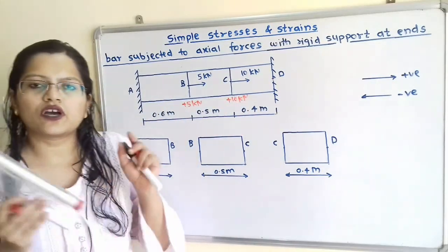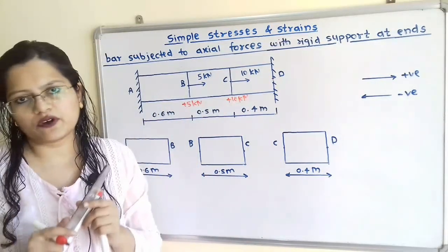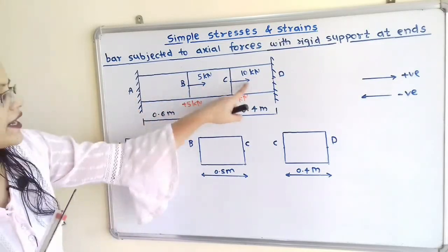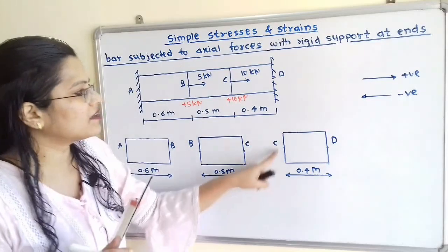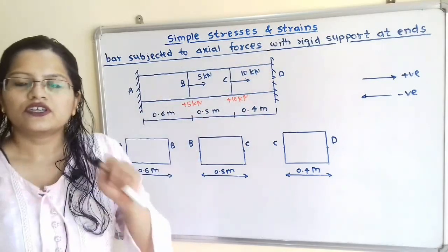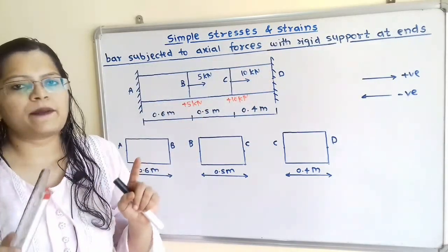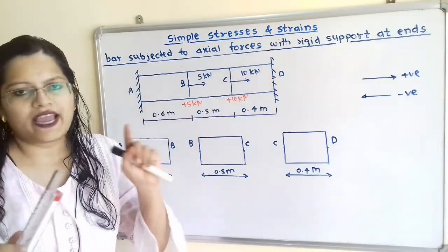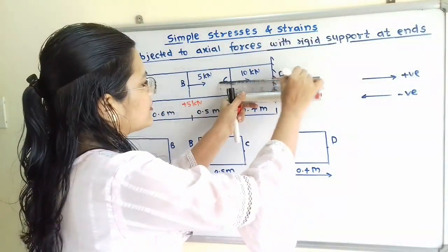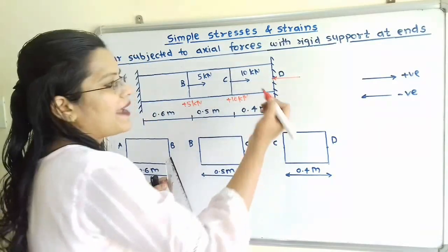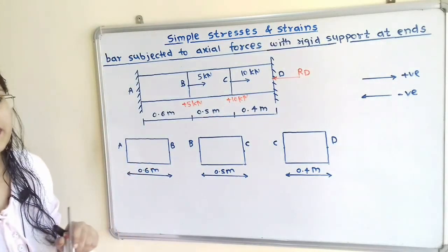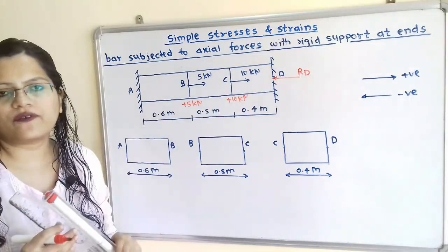We are going to solve this question using a free body diagram. The bar is divided into 3 portions: 1, 2, and 3. We will consider the third portion. The end at point D is fixed, so the reaction is applied towards the bar at point D from the fixed surface. We will show the direction towards the bar and its magnitude is unknown — this reaction at point D is Rd.